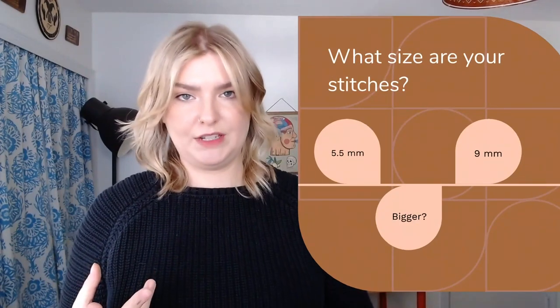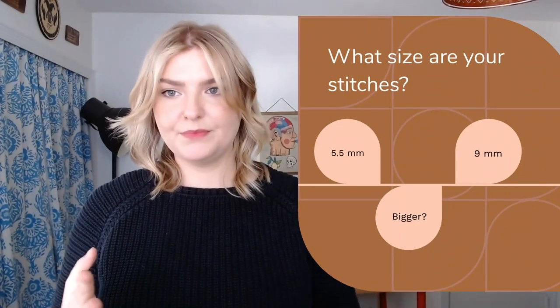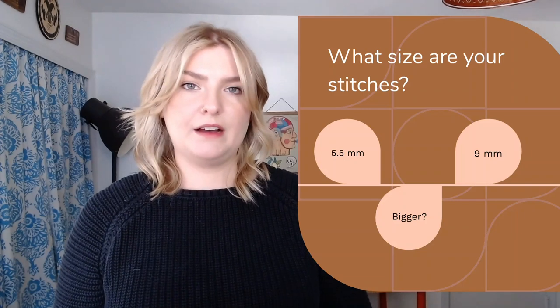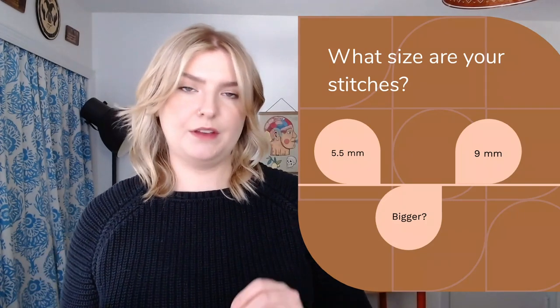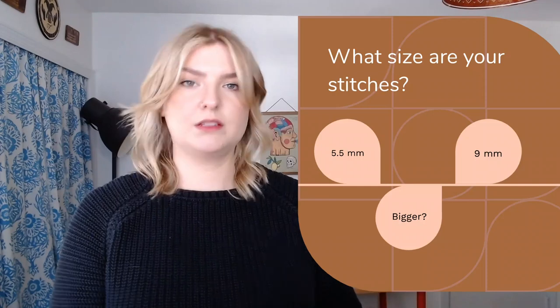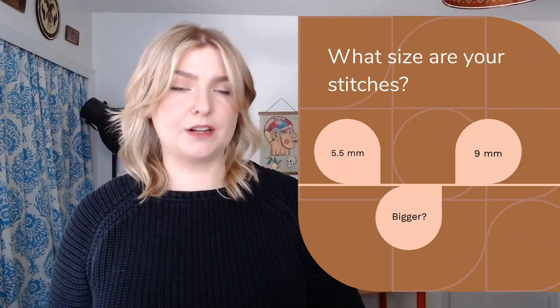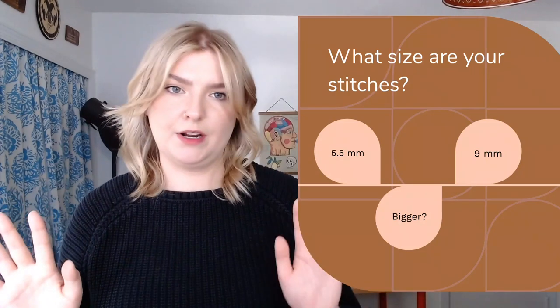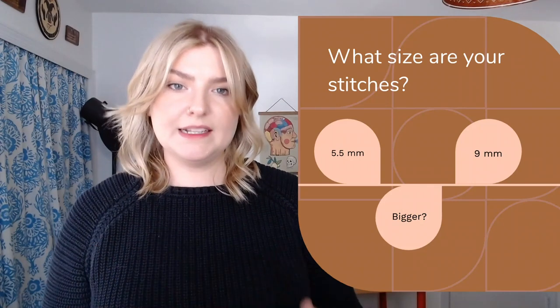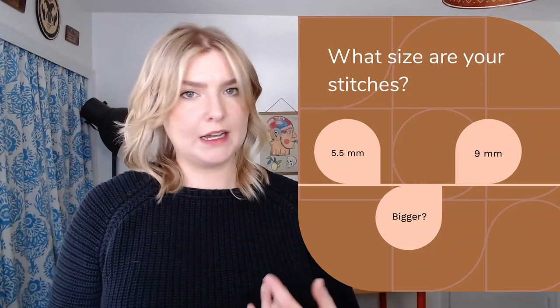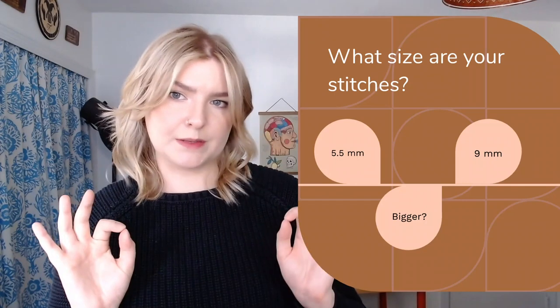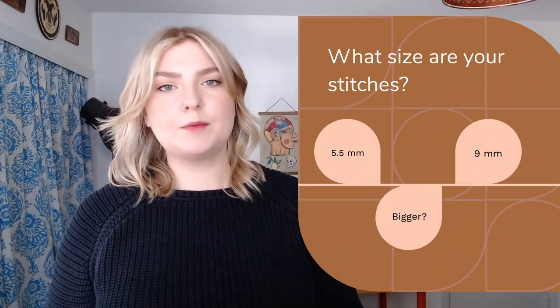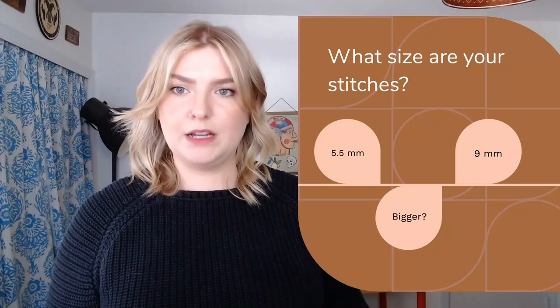Now let's get into the meat of this — how can we use decorative stitches to create quilting designs? First, let's think about decorative stitches for a moment. Depending on your machine, you probably have a maximum stitch width of either five and a half millimeters or nine millimeters. Other brands may have something different — seven is really common. On a Bernina, it's five and a half or nine. As an embellishment, those sizes are great. A nine millimeter stitch will be bold, but isn't too much.